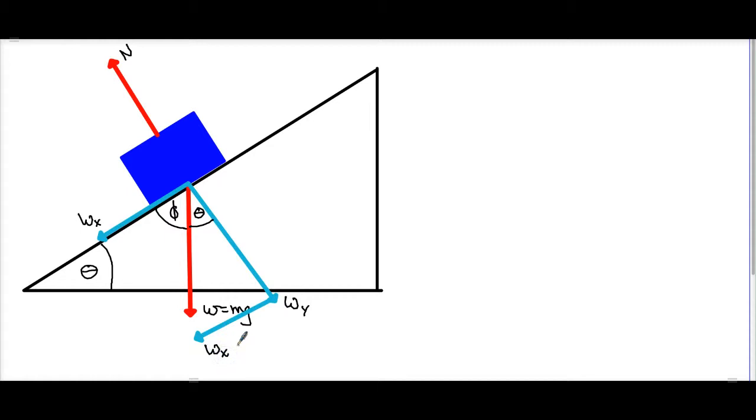So what that allows us to do then is really, now we can find the components or the magnitudes of our x and our y components. So if I want to find out what is the magnitude of w sub x, or weight sub x, we can just do SOHCAHTOA, where now what we look at, this is the opposite side. We want to find the opposite side, and we know the hypotenuse.